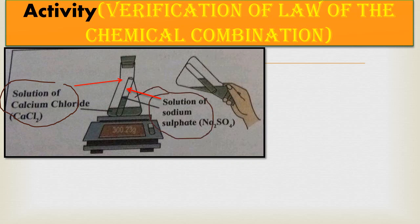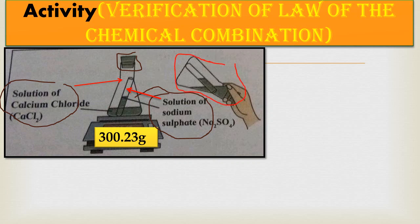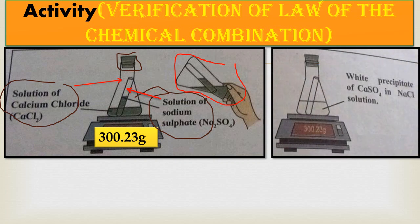Tie a thread to the test tube and insert it into the conical flask. Seal the conical flask with an airtight rubber stopper — indicated by the brown line. Weigh the mass of the conical flask using a balance. Then tilt the conical flask so the sodium sulfate solution in the test tube pours into the conical flask, mixing with the CaCl₂ solution. The mass of the solution before mixing is 300.23 grams.